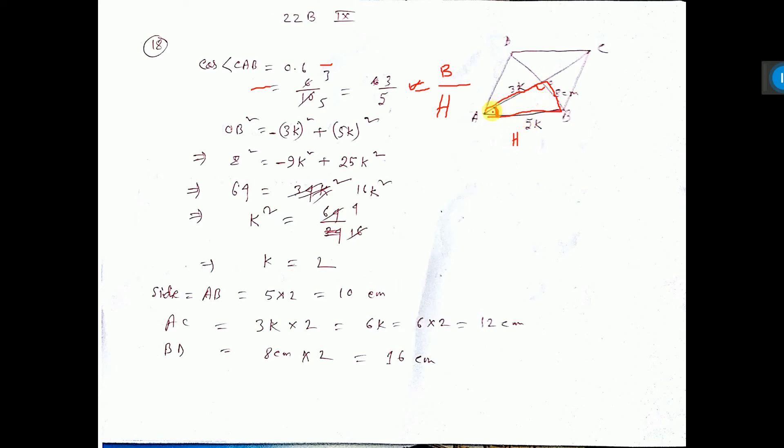And this angle's nearer side is called base. That means AO is the base and OB is the perpendicular. So base, it is 3K I have considered, and hypotenuse, 5K I have considered, because K you should consider with this, 3K and 5K.